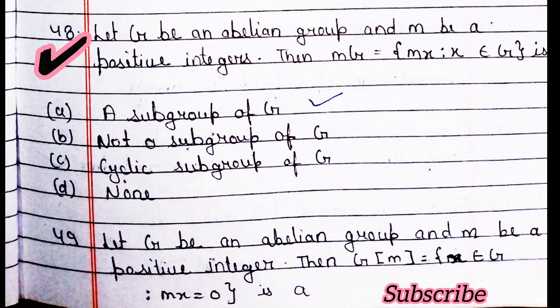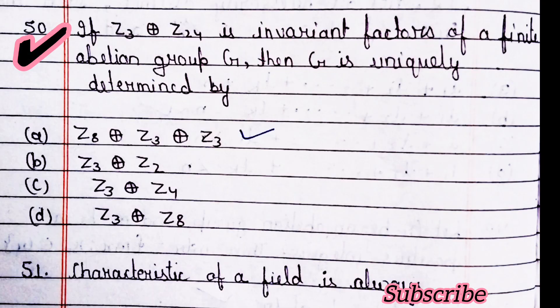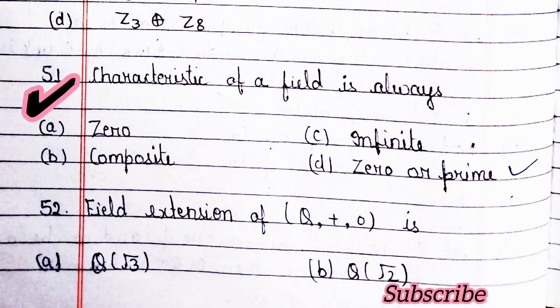Next question: let G be an abelian group and m be a positive integer, then this equals — option A is right, a subgroup of G. Next question: let G be an abelian group and m be a positive integer, then this is a subgroup of G. Next question: if Z3 direct sum Z24 is an invariant factor of an infinite abelian group G, then G is uniquely determined by — option A is right.